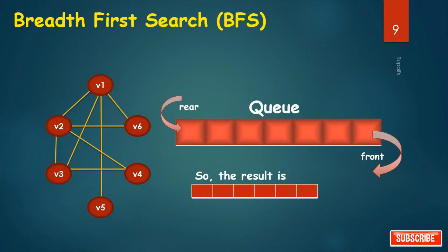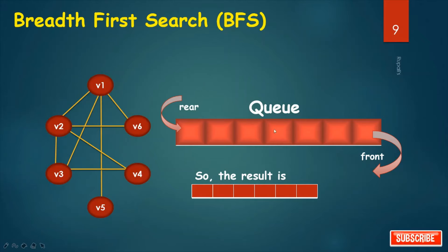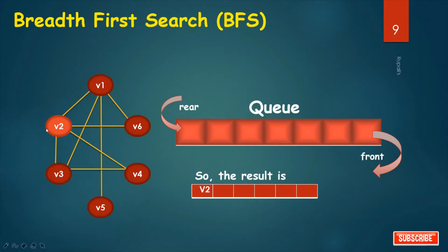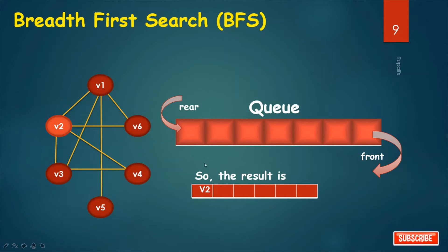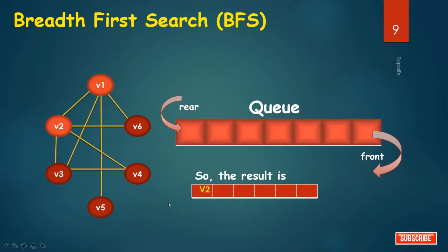I want to traverse this graph by BFS. You can start from any node — here I am starting with node V2. The status of V2 is 1. When inserting V2 into the queue, the status becomes 2; when removing it, the status is 3. The connected nodes with V2 are V1, V4, V3, and V6 — all have status 1, so we can insert them into the queue. I insert them as: V1, V4, V3, V6.